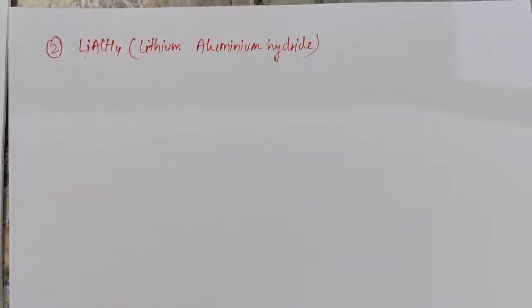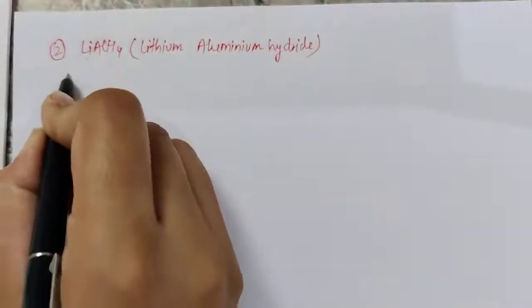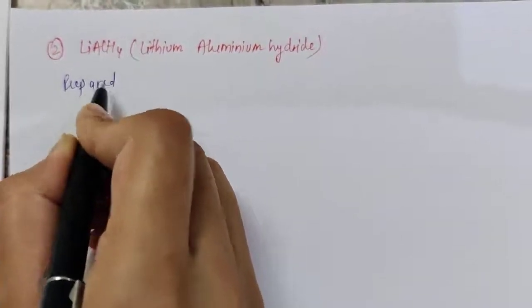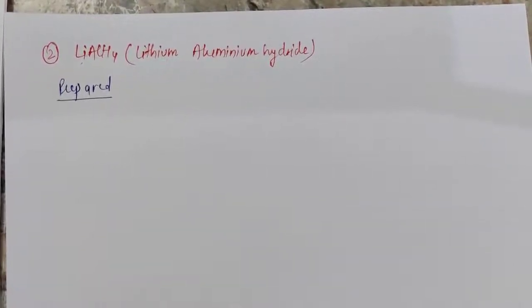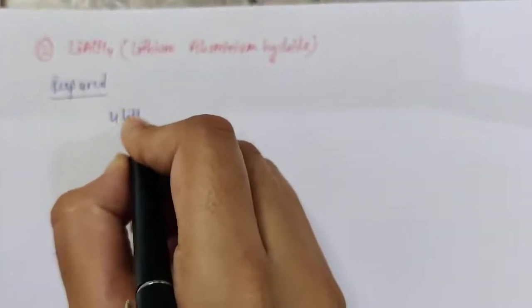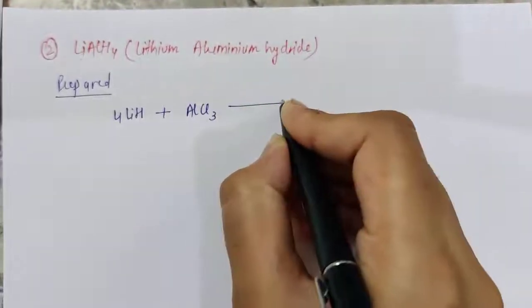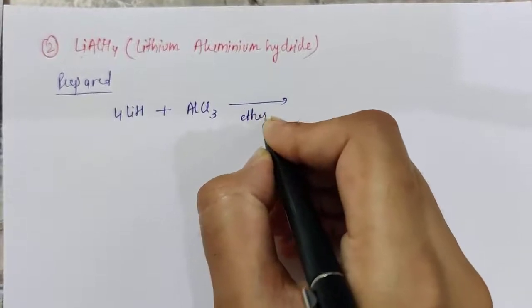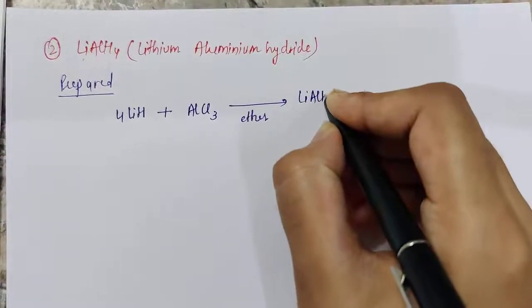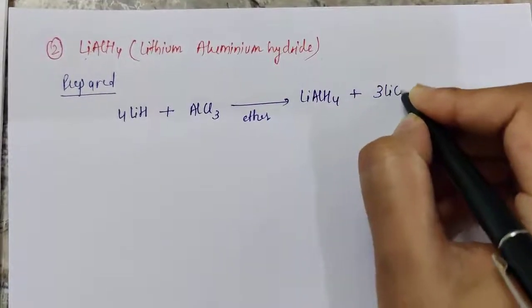The second reducing agent we have to study is lithium aluminium hydride. Lithium aluminium hydride is prepared by slowly adding anhydrous aluminium chloride to a very thin paste of lithium hydride. Aluminium chloride is gradually added to a paste of lithium hydride, taken in the solvent ether, to form lithium aluminium hydride plus lithium chloride.